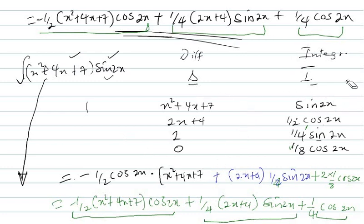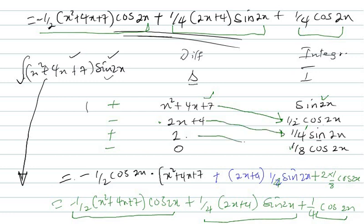It's very simple — just put positive, negative, positive, negative for the signs. Differentiate the polynomial function going down, integrate the transcendental function going down, then use diagonal arrows to cross and multiply each pair, applying the sign. This is the final solution. Don't forget to subscribe, like, and comment. Thank you for watching.